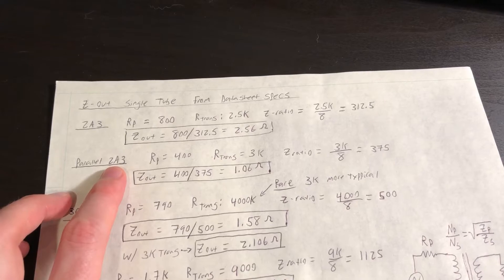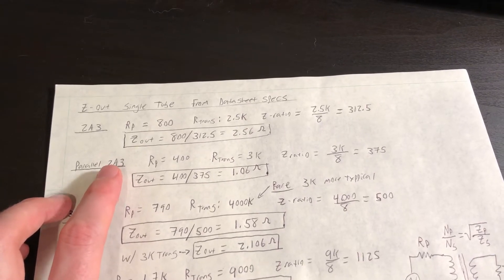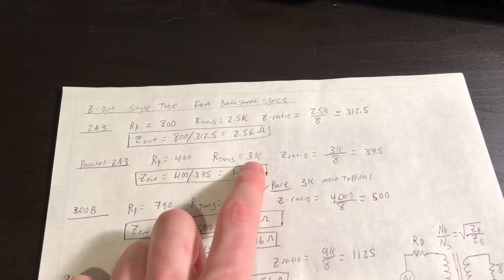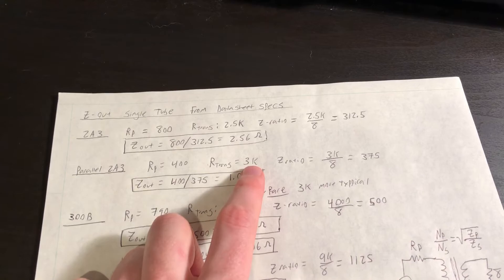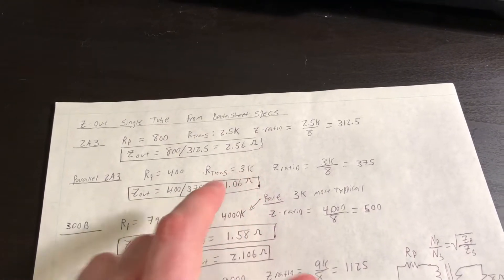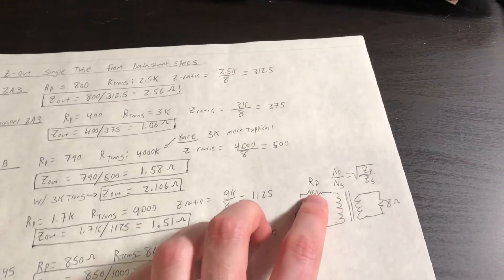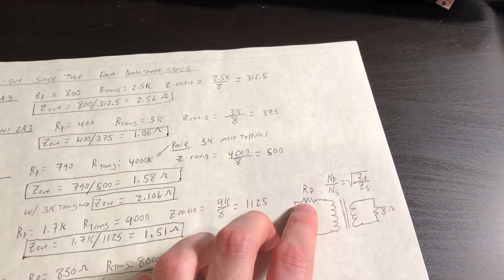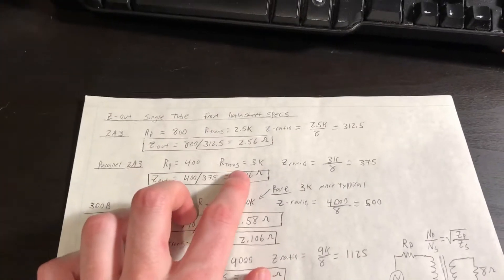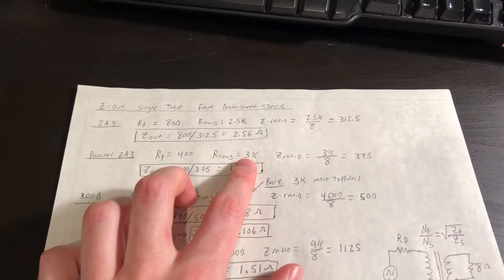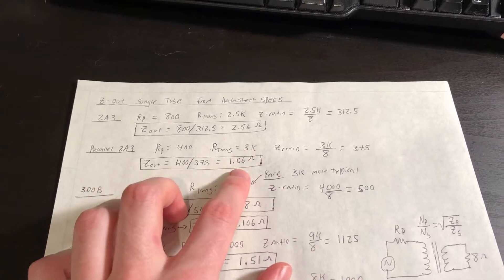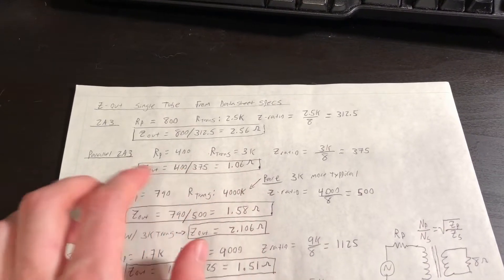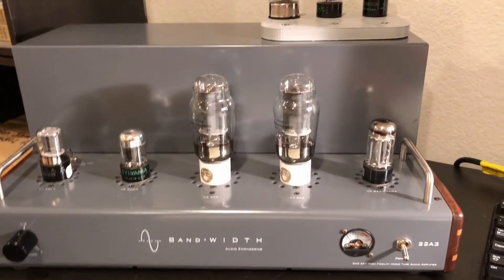A parallel 2A3 amp, and this is similar to how we're operating it in our 22A3 amplifier, we actually keep a fairly high transformer impedance ratio. We gain a little bit of output power because we have less voltage division from the plate resistance to our reflected load. We have our plate resistance because we've got two tubes now in parallel. But by keeping a high impedance ratio transformer, we get much lower output impedance. So we gain a bit of power and we reduce the output impedance.